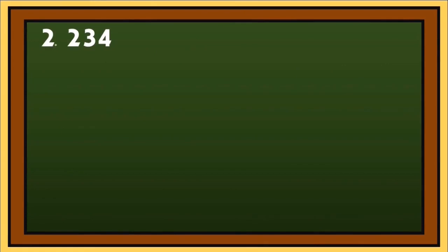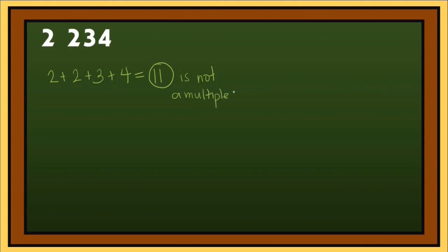Now let's check if 2,234 is divisible by 3. Again, we will add all the digits: 2 plus 2 plus 3 plus 4. 2 plus 2 is 4, 4 plus 3 is 7, 7 plus 4 is 11. 11 is not a multiple of 3. So, 2,234 is not divisible by 3.